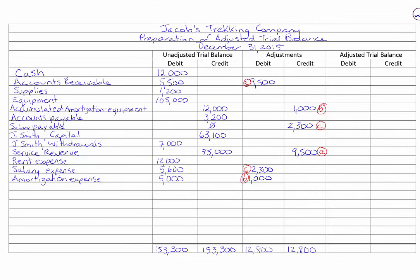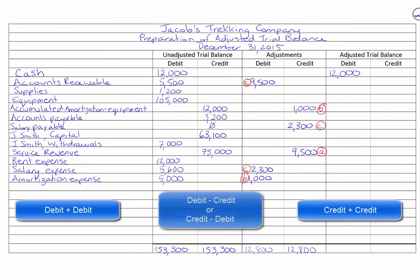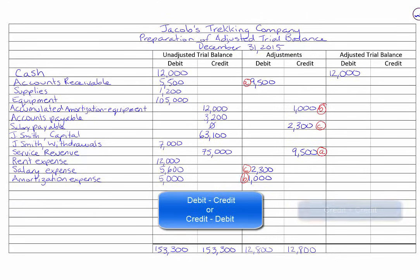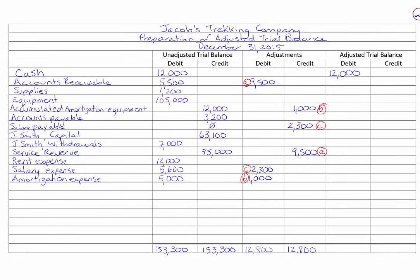The next step is to go across and calculate the adjusted trial balance total for each account. For each account, there will only be a debit or a credit balance. For cash, we have $12,000 with no adjustments, so our balance is $12,000. For accounts receivable, we have a $5,500 debit and an adjustment of debit $9,500. If we have two debits, we add them together. If we have two credits, we add them together. If there is a debit and a credit, we subtract them. So in this case, we have two debits — $9,500 plus $5,500 — and we do the same for each line.